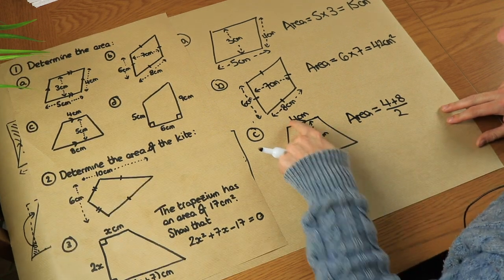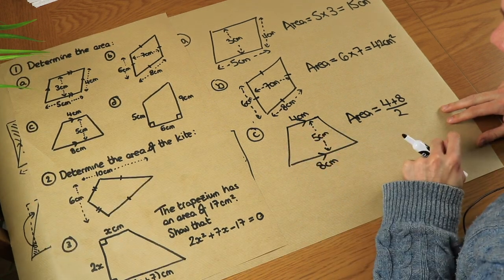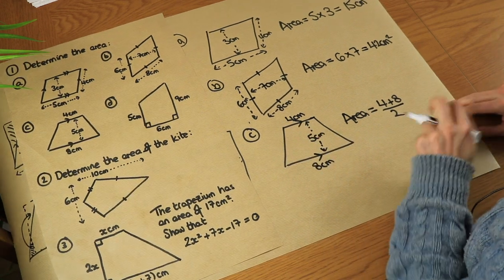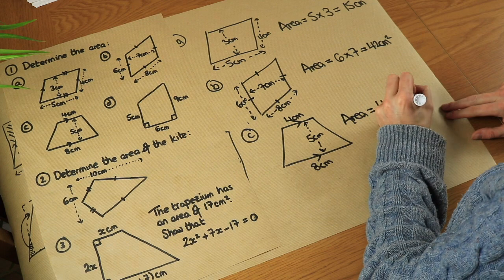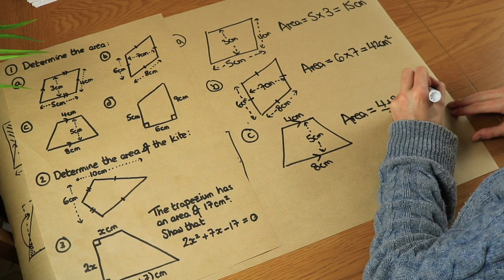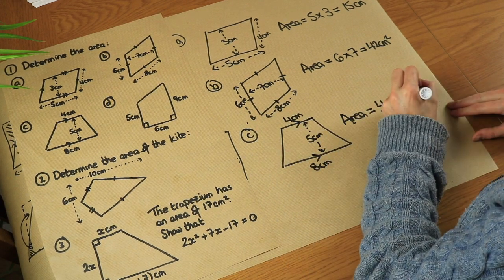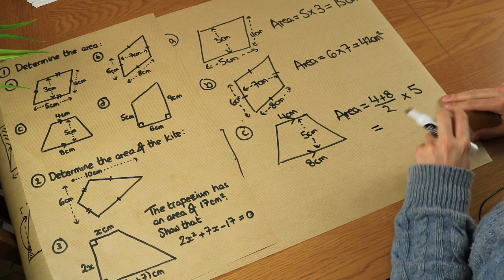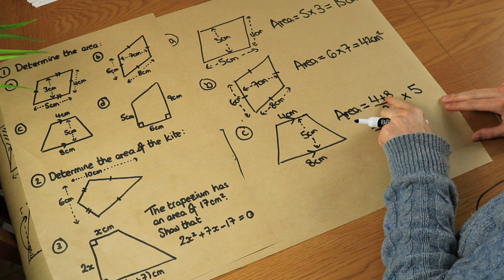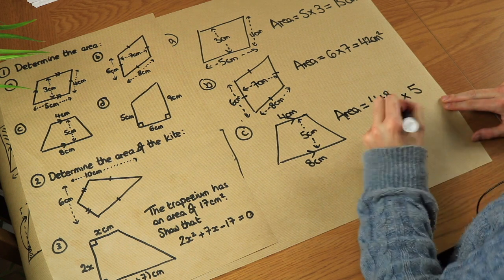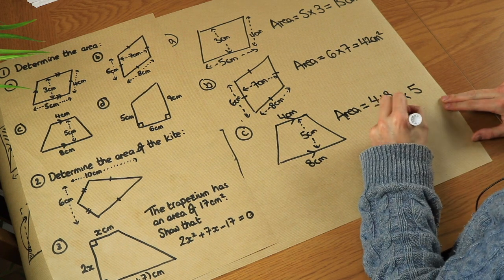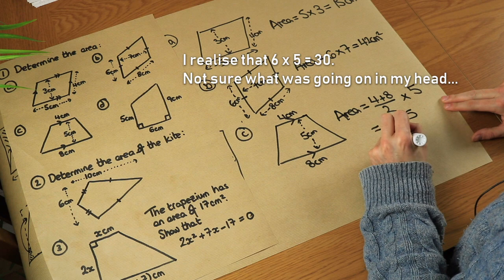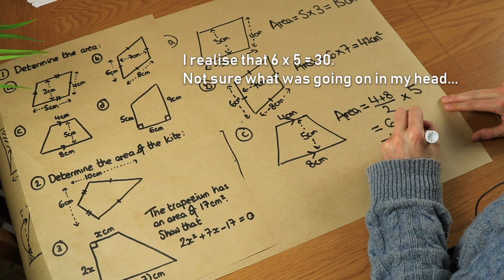The average of four and eight: we could add them and divide by two, or just say halfway between four and eight is six centimetres. So it's that times by the height of five between them — 12 over 2 is 6, times 5, which is equal to 30 centimetres squared.